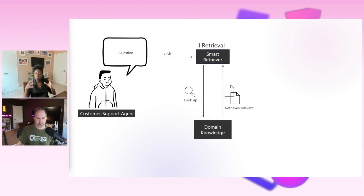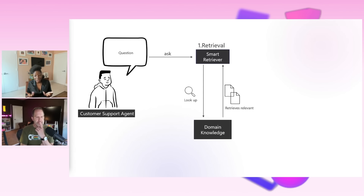I'm going to explain RAG in three steps. Let's start with Retrieval. If I was a customer support agent, you'd want to know context of where this was happening before — you'd have to read through documentation or ask someone else for advice. In this scenario, the customer support agent could ask a bot a question. This question is then passed on to a smart retriever. In the retrieval section, we take that question and look up based on domain knowledge — in this case, customer support tickets. Based on things like semantic relevance and cosine similarity, the AI retrieves relevant documents.